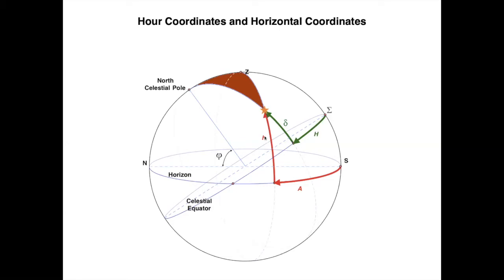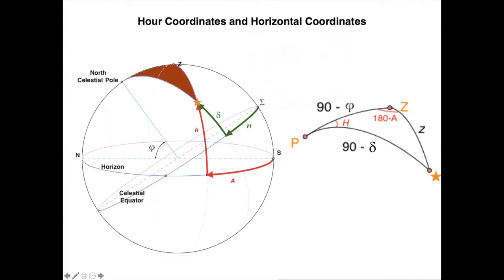You end up with a spherical triangle drawn between the North Celestial Pole, the star, and the zenith. The elements of this triangle are: the arc from the pole to the star — if the declination is δ, then this arc is 90 minus δ.